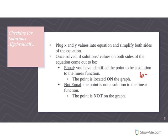If both sides equal each other — say you get 6 equals 6 — that means the point is located on your actual linear graph. If they're not equal, such as getting 5 on the left when the right side is 6, then the point is not a solution to that linear function.